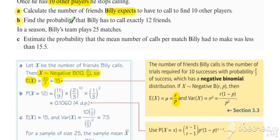Part B: find the probability that Billy has to call exactly 12 friends. Again, we're working with a negative binomial distribution, probability X equals 12.